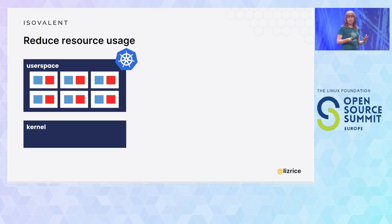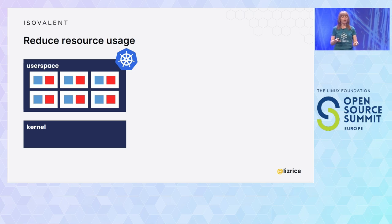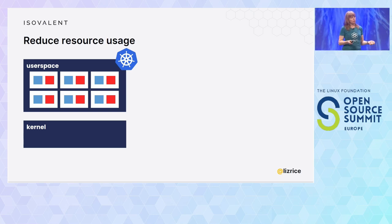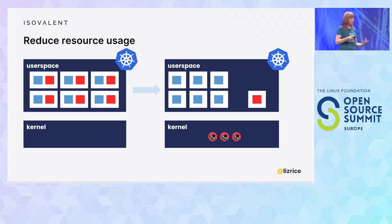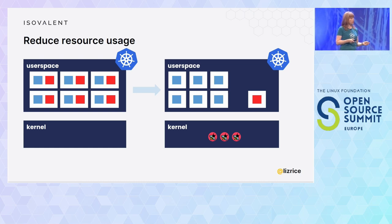The sidecar model can also be pretty wasteful of resources. Every pod has to be configured to allow for the CPU and memory not just of the application container but also for the sidecar container. There could be duplicate copies of configuration and state information in every one of those sidecar instances. Pods are by design isolated from each other, so if sidecar containers want to share information, they can only do so using network messages. But with eBPF, we have a data structure called maps, which allow us to communicate information between eBPF programs and between those programs in the kernel and any user space agent — so we can share and use resources much more efficiently than the sidecar model.